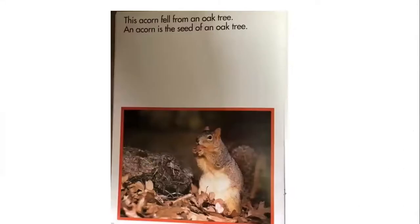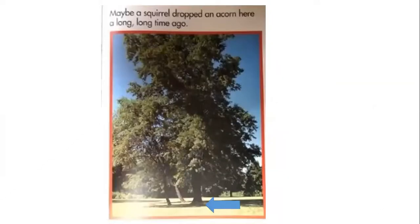This acorn fell from an oak tree. An acorn is the seed of an oak tree. You might see squirrels gathering nuts or acorns. Sometimes they might plant an acorn in the ground to save it for later, and then they forget where they put it. Maybe that squirrel dropped an acorn here a long, long time ago and forgot about it — and this tree grew.